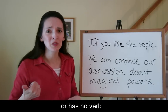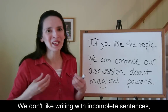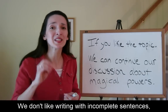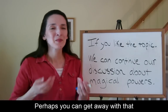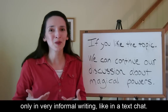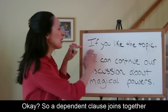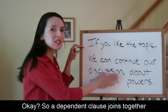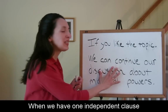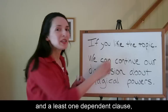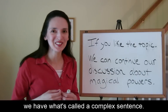A fragment has no subject, or has no verb, or has no main clause. We don't like writing with incomplete sentences, especially in business writing or academic writing. Perhaps you can get away with that only in very informal writing, like in a text chat. So a dependent clause joins together with a main clause. When we have one independent clause and at least one dependent clause, we have what's called a complex sentence.